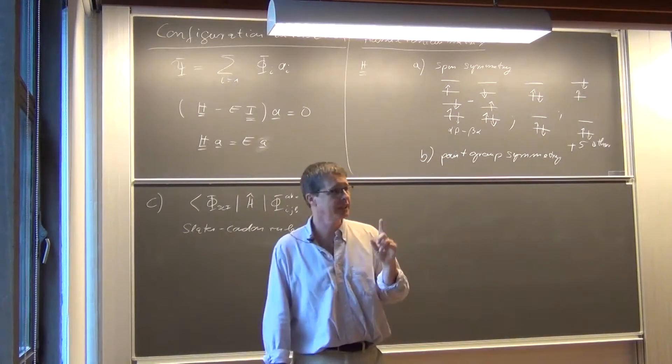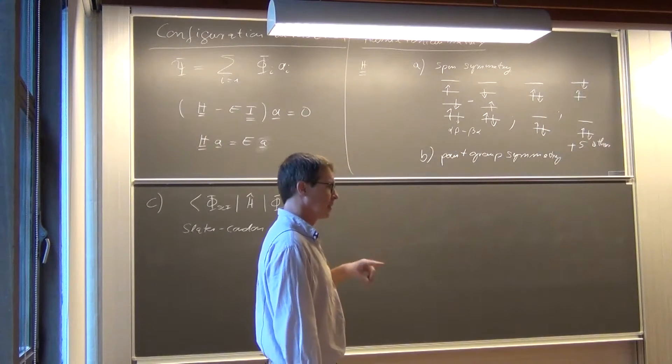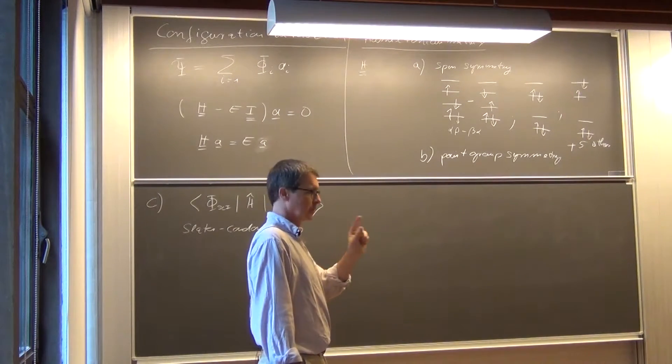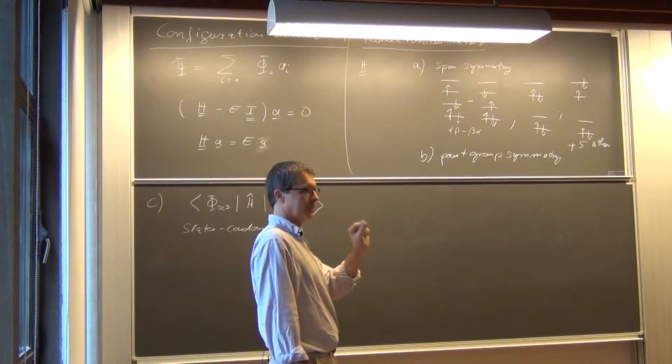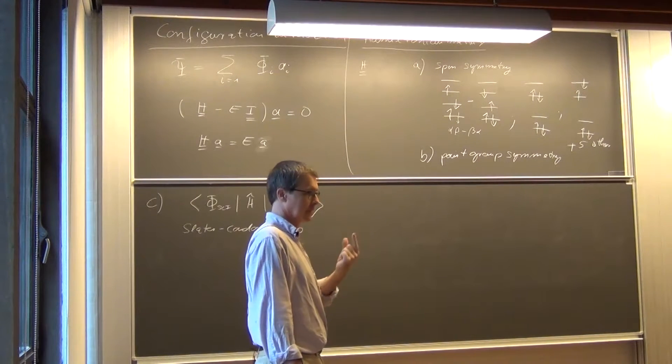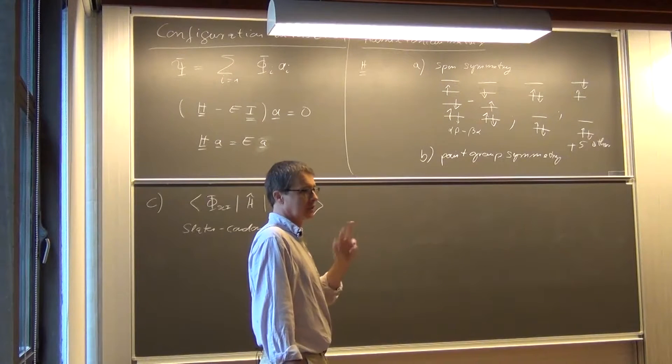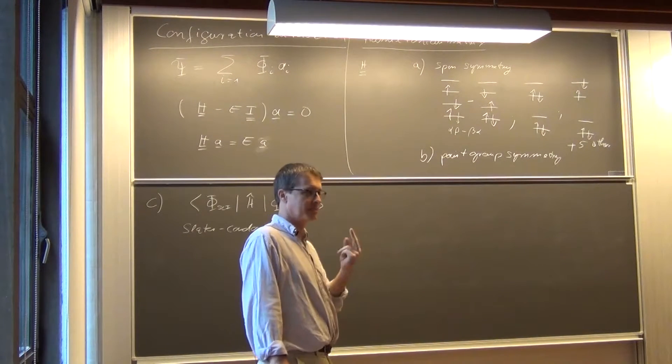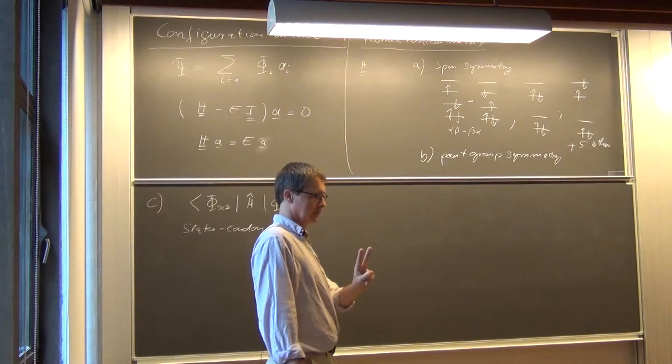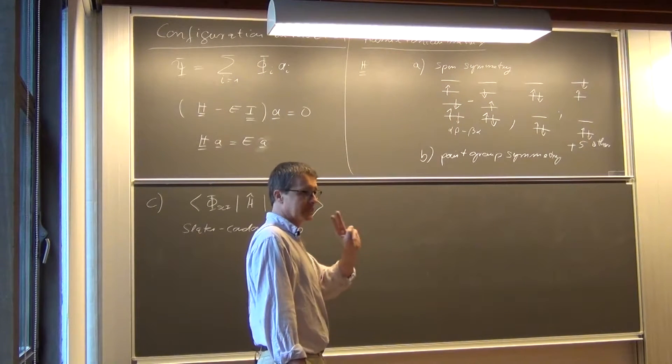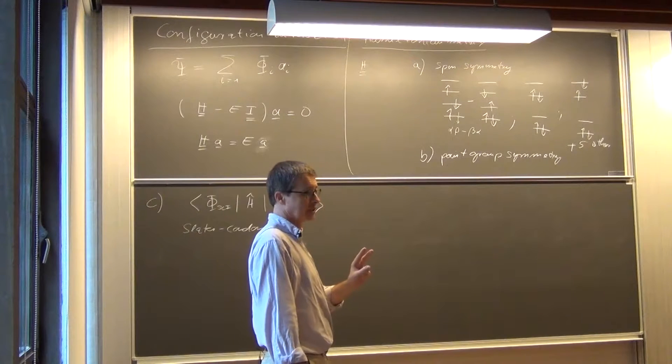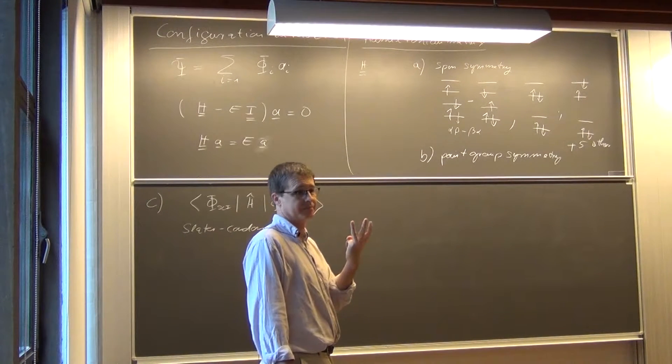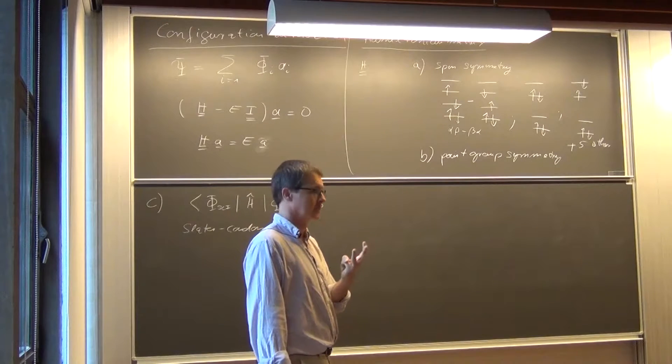The point is that the Hamiltonian has one electron operators, the kinetic energy and the electron-nuclear attraction operator. Each term depends only on the coordinates of one electron. And then you have the electron-electron repulsion, Coulomb repulsion operator. That obviously depends on the coordinates of two electrons. But there's no term in the Hamiltonian which depends on three electrons.